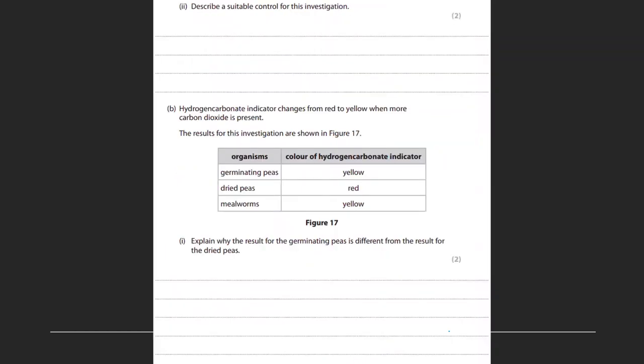State two ways this method could be improved to make results for these three organisms more comparable. So same biomass. And another one is that you could have more examples of living and dead organisms. We'll assume those peas are dried and dead. So suitable control for this investigation. So keep the mass of each organism the same. Hydrogen carbonate indicator changes from red to yellow when more carbon dioxide is present. The results: germinating peas, yellow, so carbon dioxide is present. Dried peas, no carbon dioxide. Millworms, yes.